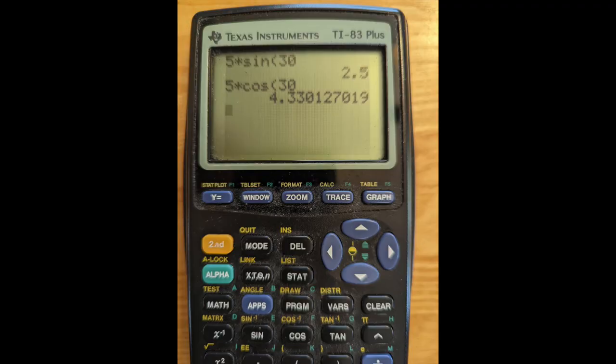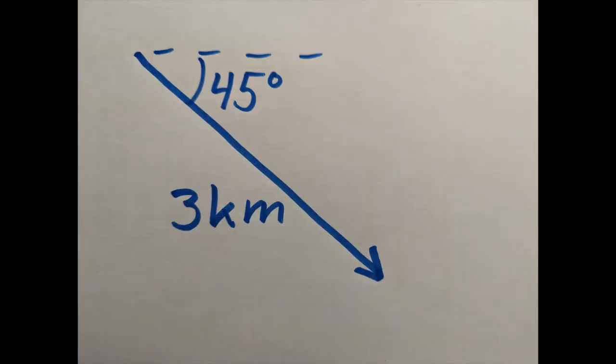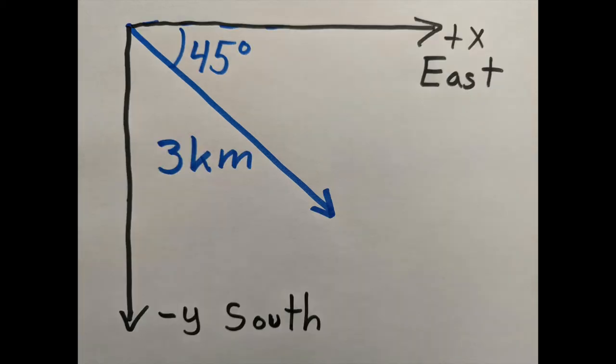The problem says that I walk 3 kilometers due southeast, so this is our picture. Now, when we're adding vectors together, we only get to choose the xy axes once. From that point, we have to be consistent. So positive x is still to the right, is east, and negative y is south, to be consistent.